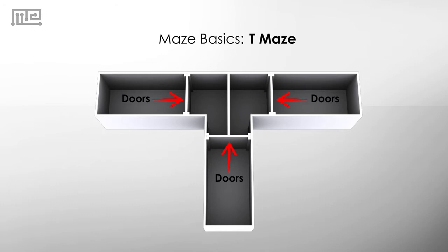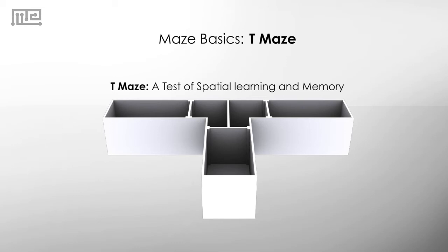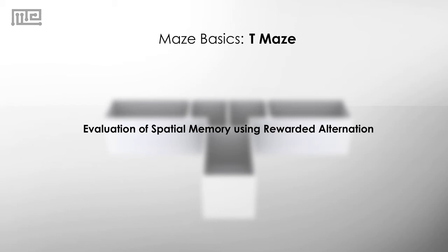At the entrance of each arm, there are doors that confine the mouse to a specific arm or prevent the mouse from entering one of the arms. There are two common protocols used with the T-Maze to assess spatial memory and learning in mice.